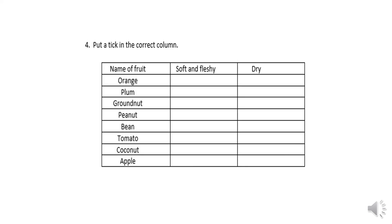The last question is: put a tick in the correct column. There are some fruits given — orange, plum, groundnut, peanut, bean, tomato, coconut, and apple. You have to separate the soft and fleshy fruits from the dry fruits. Orange is a soft and fleshy fruit, plum is also soft and fleshy, and groundnut is dry.